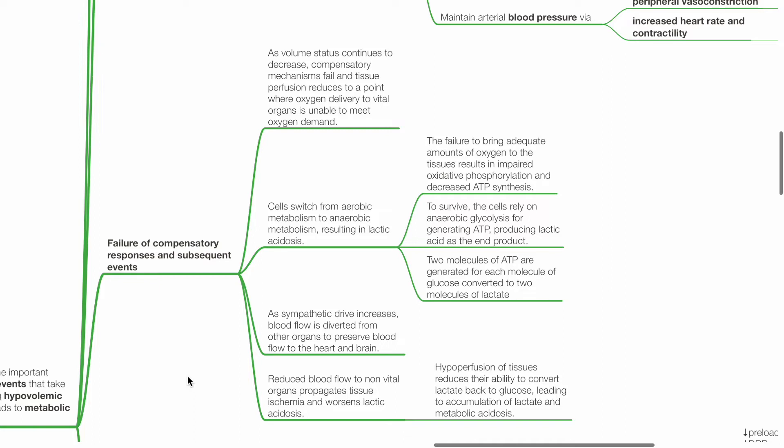Failure of compensatory responses and subsequent events: As volume status continues to decrease, compensatory mechanisms fail and tissue perfusion reduces to a point where oxygen delivery to vital organs is unable to meet oxygen demand. Cells switch from aerobic to anaerobic metabolism resulting in lactic acidosis. The failure to bring adequate amounts of oxygen to the tissues results in impaired oxidative phosphorylation and decreased ATP synthesis.